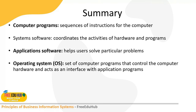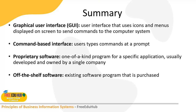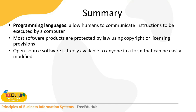In summary: computer programs are sequences of instructions for a computer. System software coordinates the activities of hardware and programs; application software helps the user solve particular problems. An operating system is a set of computer programs that controls hardware and acts as an interface with application programs. A graphical user interface uses icons and menus to send commands; a command line interface uses typed commands at a prompt. Proprietary software is a one-of-a-kind program for a specific application, usually developed and owned by a single company. Off-the-shelf software is an existing purchased program. Programming languages allow humans to communicate instructions to be executed on a computer. Most software products are protected by copyright or licensing, and open source software is freely available in a form that can be easily modified.